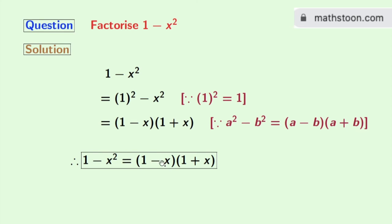so finally we get 1 minus x square is equal to 1 minus x times 1 plus x. And this is our final answer.